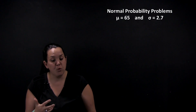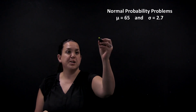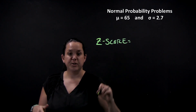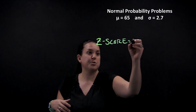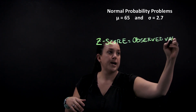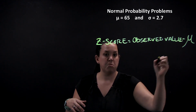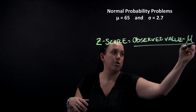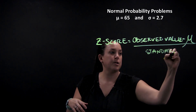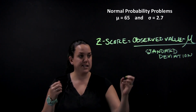The way that you calculate that distance from the mean is through something called the z-score. It tells you both the distance and direction in terms of standard deviations from the mean. A z-score is calculated by taking some observed value and subtracting the mean from it. Our mean is denoted with mu — that's the population value — divided by the standard deviation, which for the population is sigma.